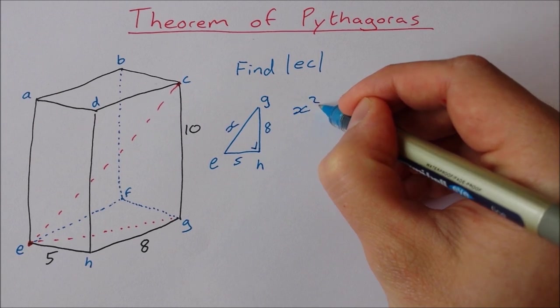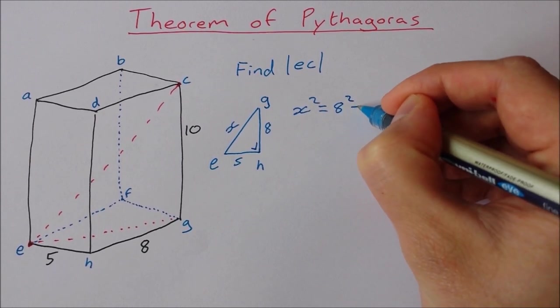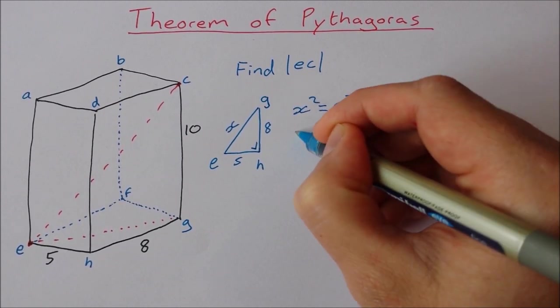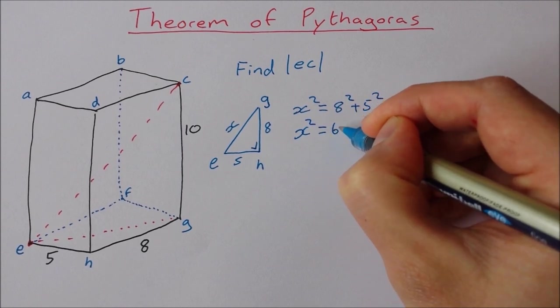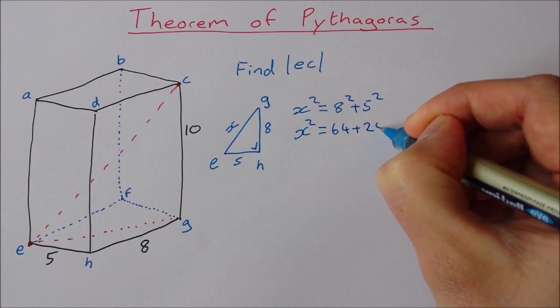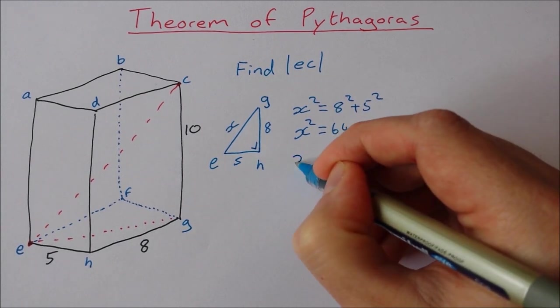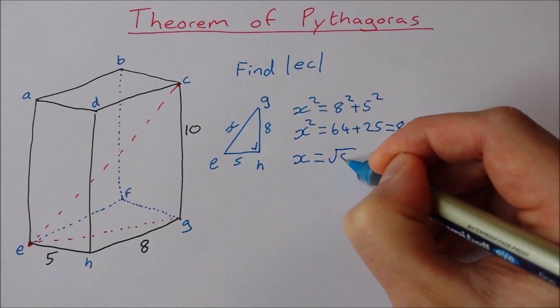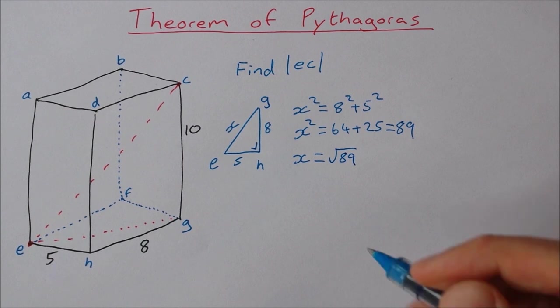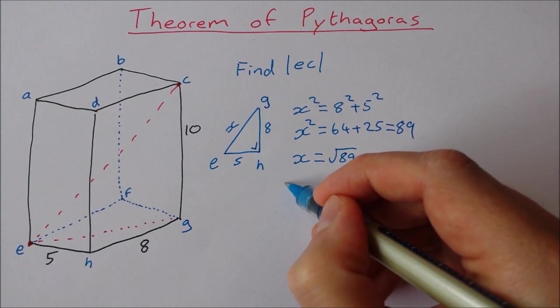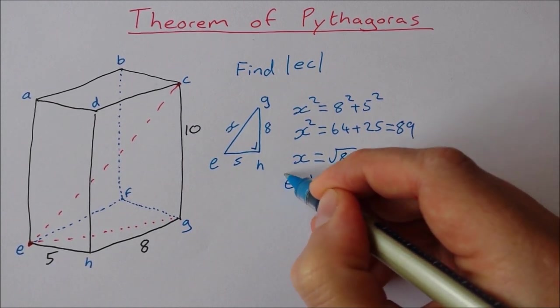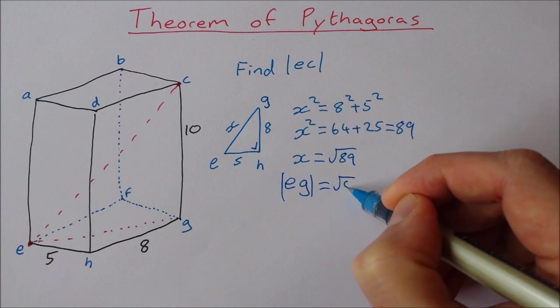So X squared is equal to 8 squared plus 5 squared. X squared equals 64 plus 25, which is equal to 89. So X is equal to the square root of 89. So that means EG is equal to root 89.